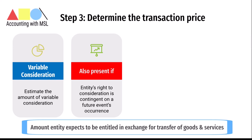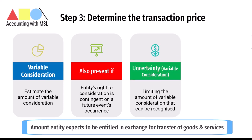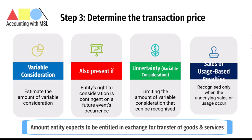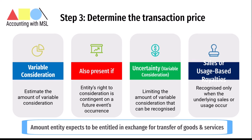Variable consideration is also present if an entity's right to consideration is contingent on the occurrence of a future event. The standard deals with uncertainty relating to variable consideration by limiting the amount that can be recognized. Specifically, variable consideration is only included in the transaction price if and to the extent that it is highly probable that its inclusion will not result in a significant revenue reversal in the future when the uncertainty has been subsequently resolved. A more restrictive approach is applied for sales or usage-based royalty revenue arising from licenses of intellectual property — such revenue is recognized only when the underlying sales or usage occurs.